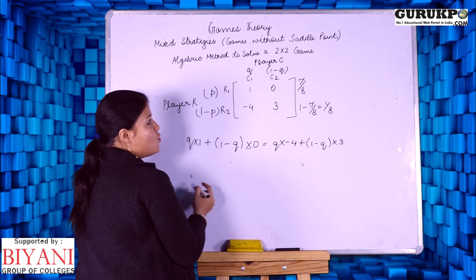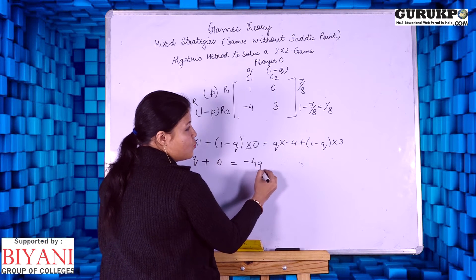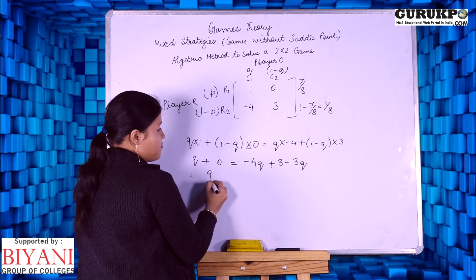Again, we are going to solve this: Q equals to minus 4Q plus 3 minus 3Q. After solving this, it is 7Q equals minus 3.